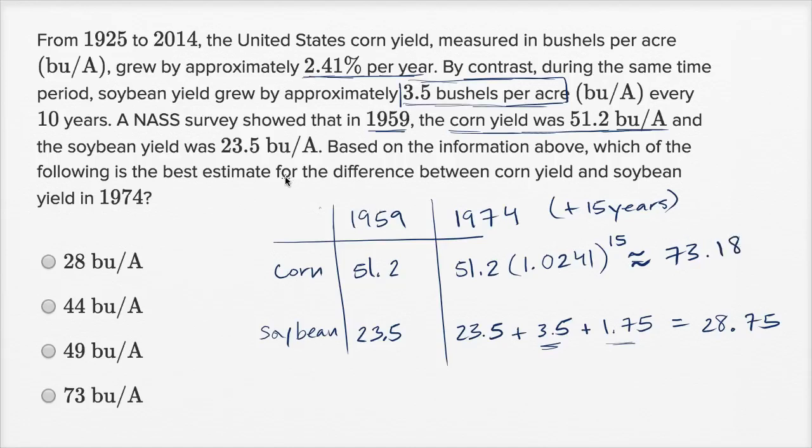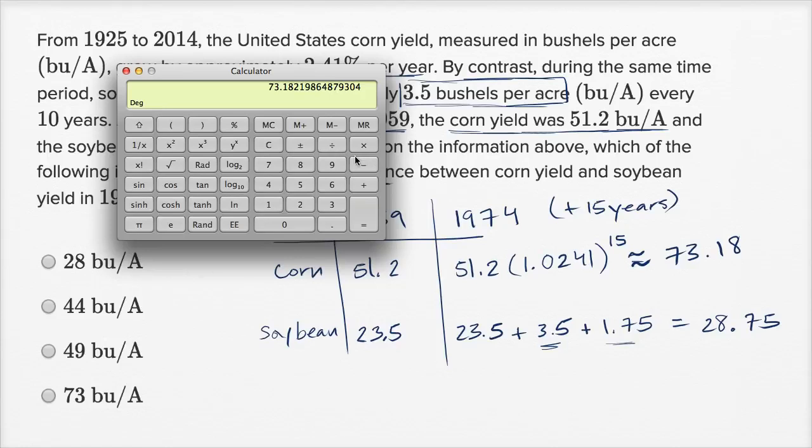Now what they want is, what's the best estimate for the difference between the corn yield and the soybean yield? So the difference 73.18 minus 28.75, and they have a couple of choices that are kind of close, so let me just make sure I do the math right. I can do this on paper, but we have our calculator, so I'll just use that.